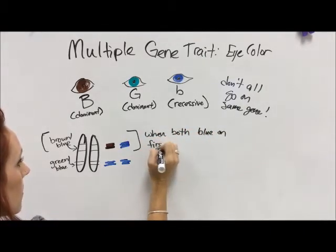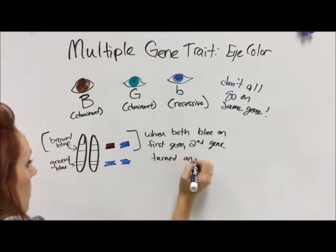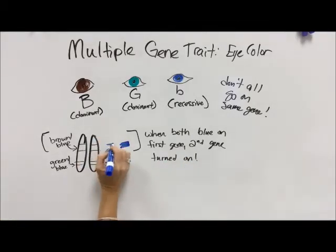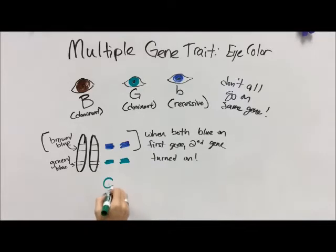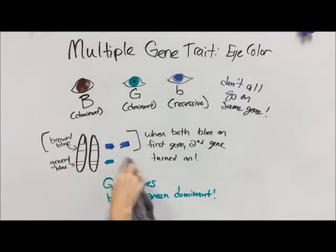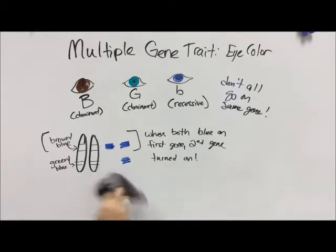When both alleles become blue on the first gene, it turns the second gene on. It doesn't mean the person will have blue eyes — it means the second gene is going to matter. So if we both have blue on gene one, the second gene gets turned on. Now you can see that green is dominant to blue on this second gene. So if you have blue on top and green on the bottom, you get green eyes, because green is dominant to blue on gene two. If you have one green on the second gene, it also overpowers the blue.